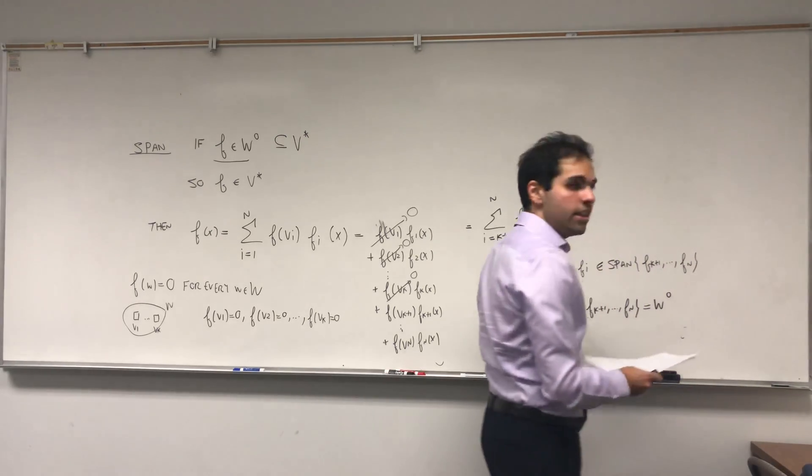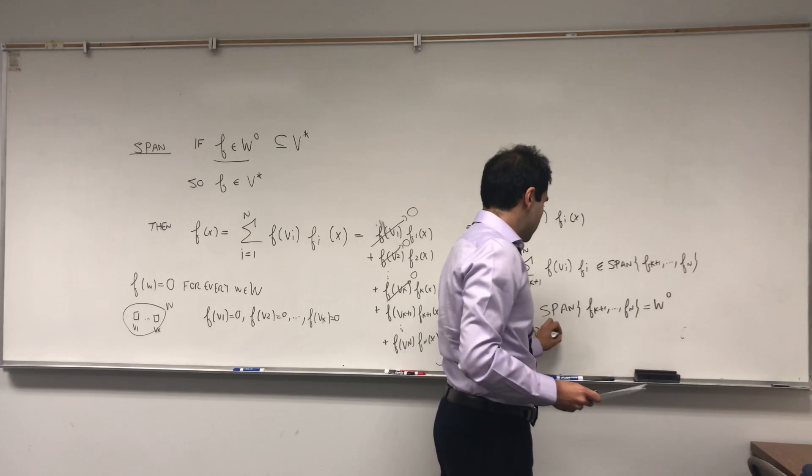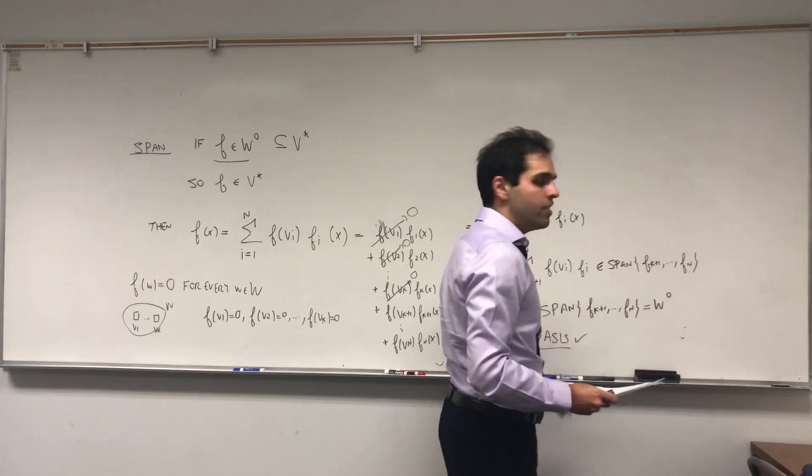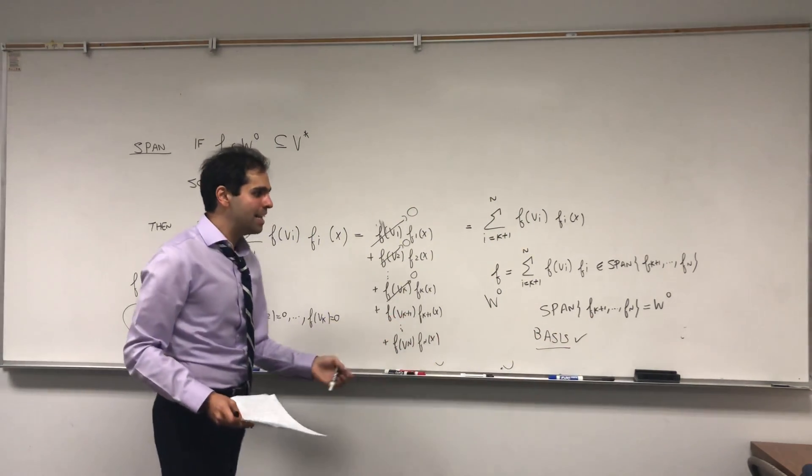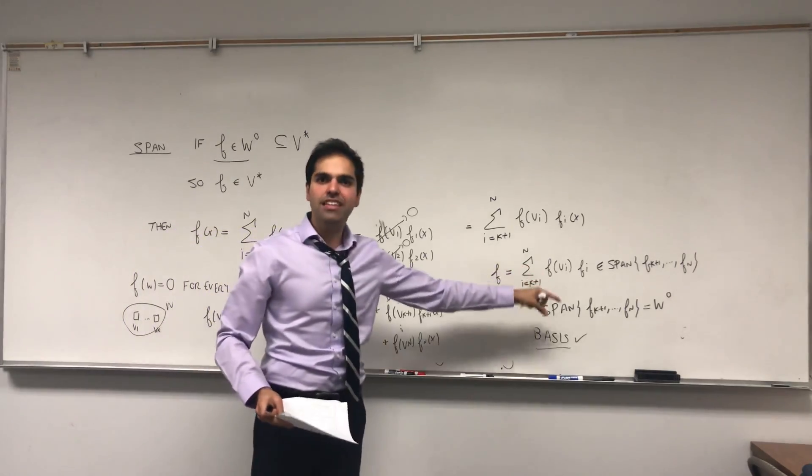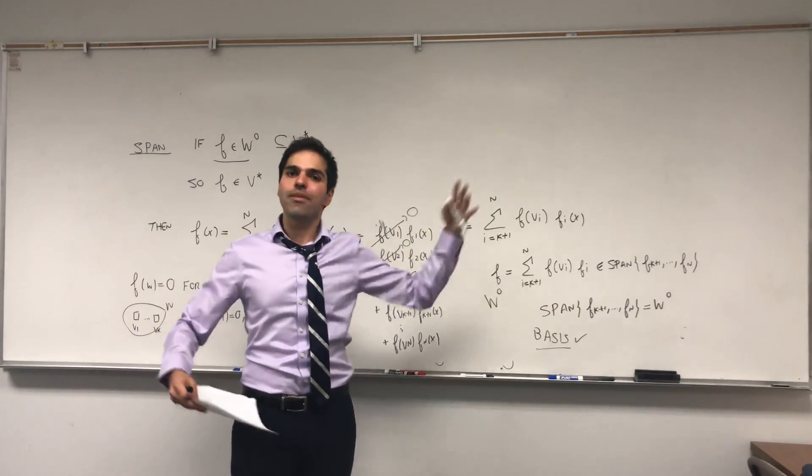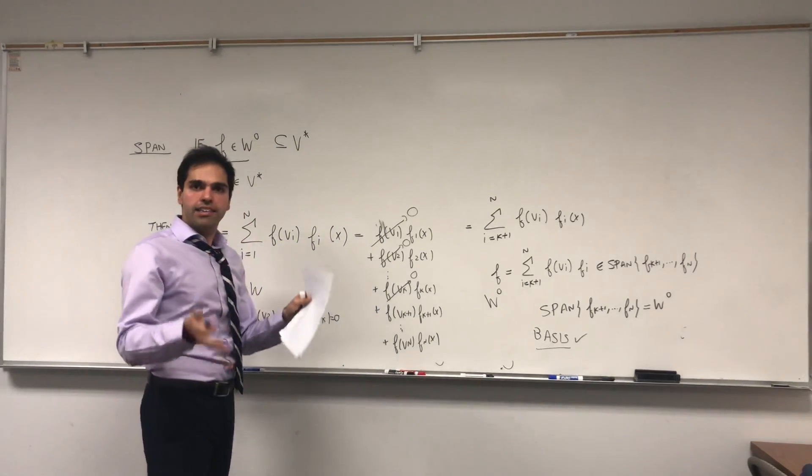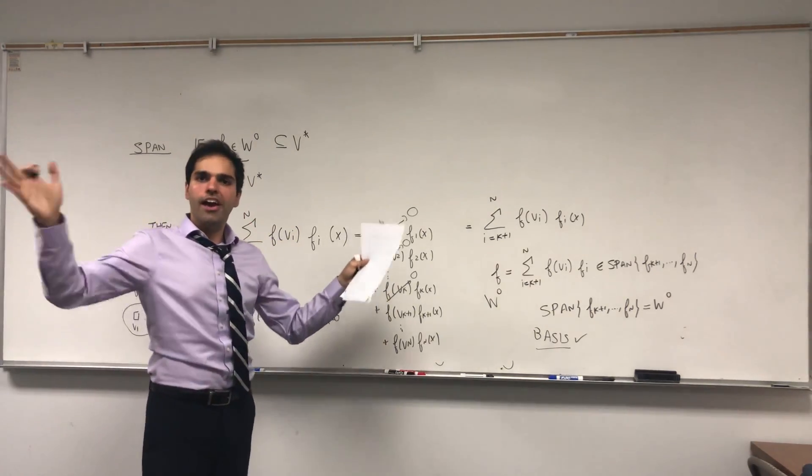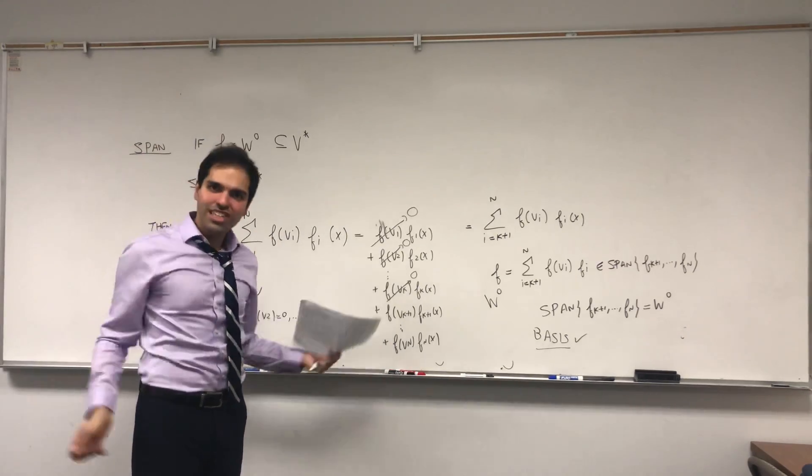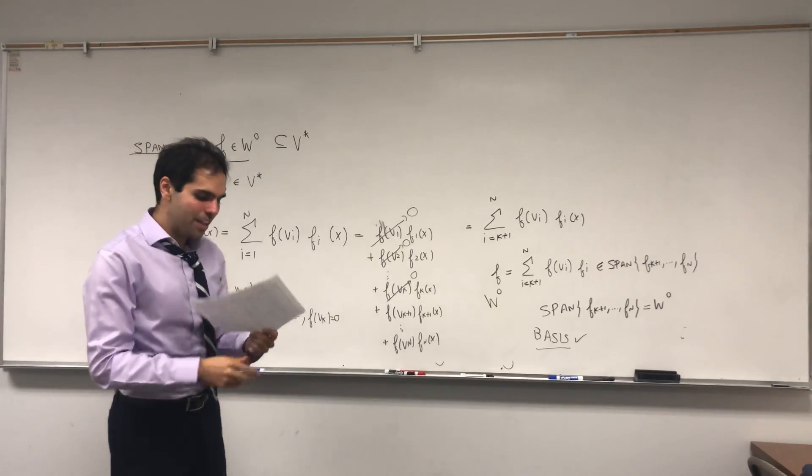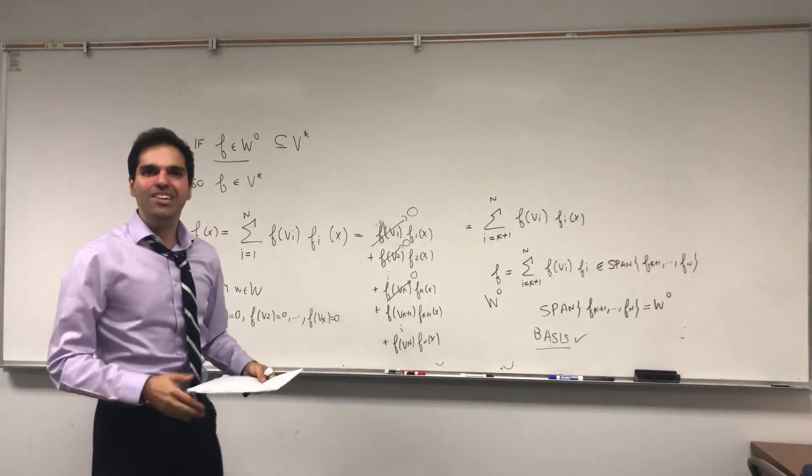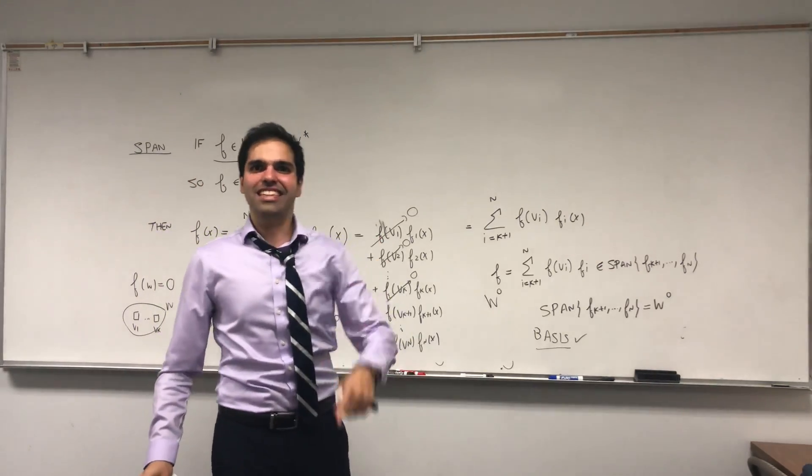And that's why this is a basis, because it's in the set, it's linearly independent, and it spans. And because this is a basis, we actually get the dimensions that match. So it turns out if you add the dimension of w and the dimension of w naught, you actually get the whole dimension of v. And next time we'll see a really cool consequence of this, so stick around.